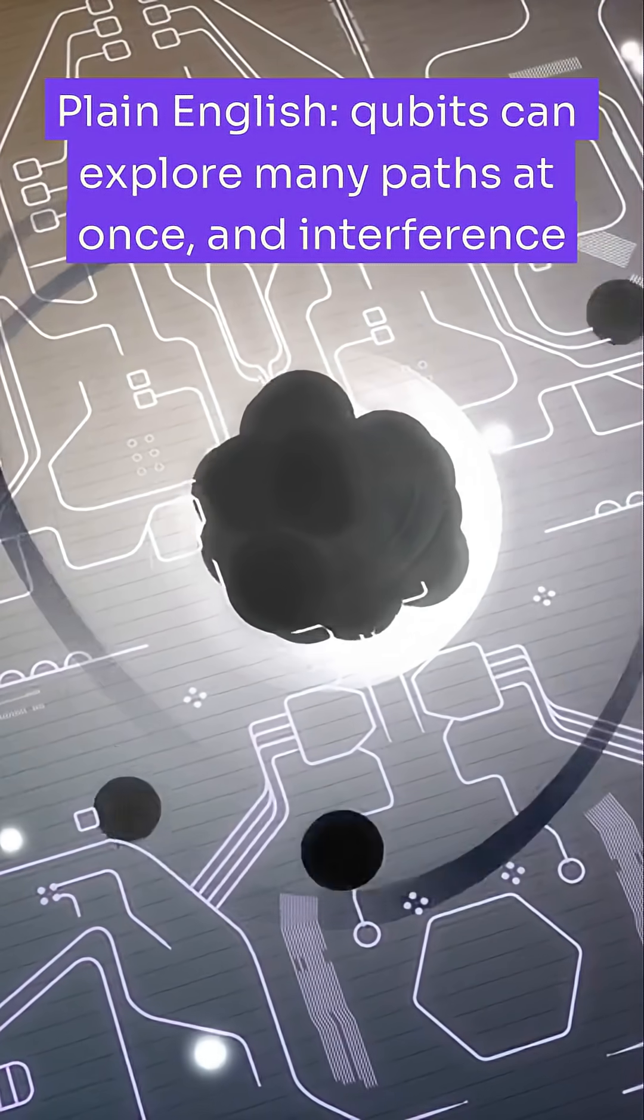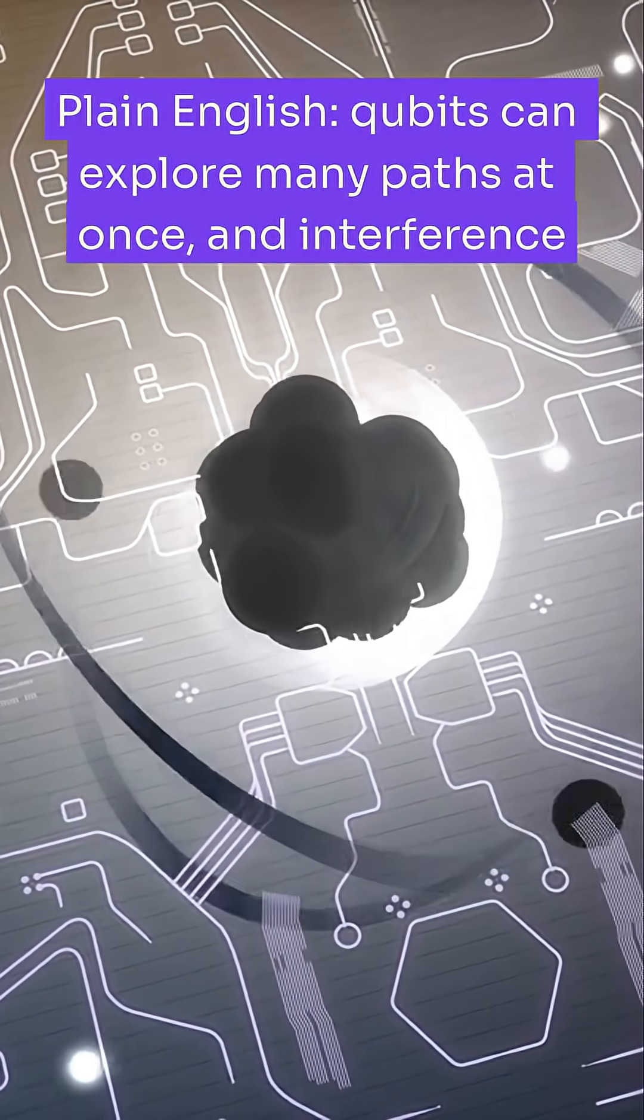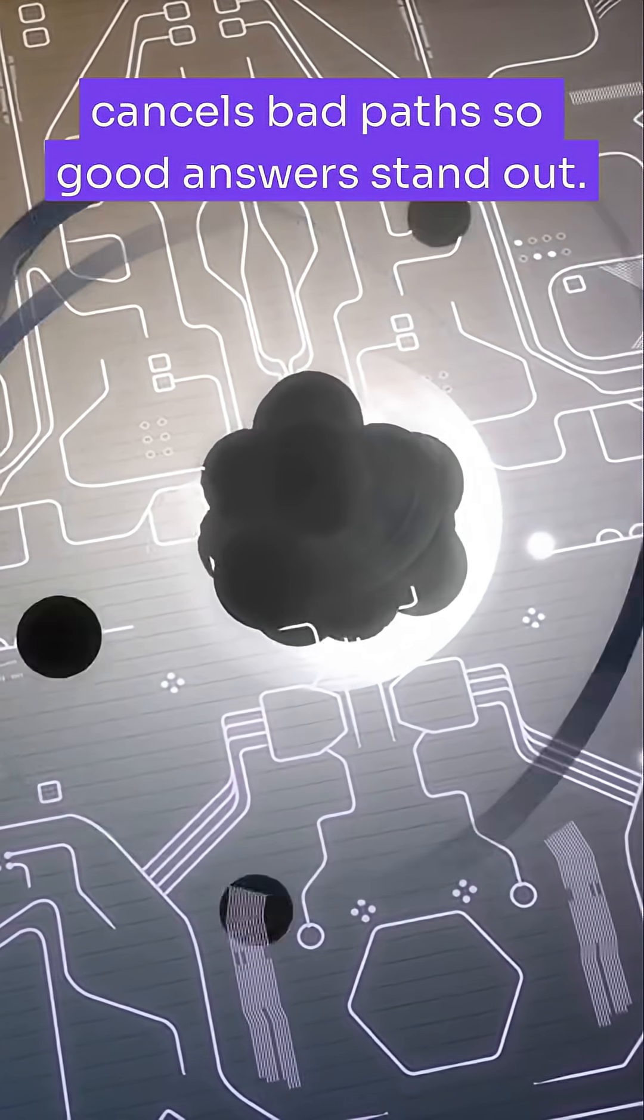Plain English, qubits can explore many paths at once, and interference cancels bad paths so good answers stand out.